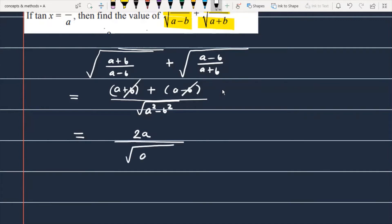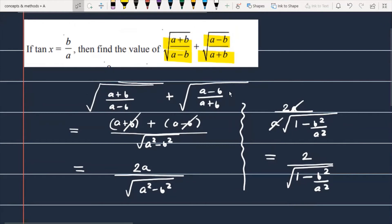If we talk about the denominator, this is a²-b². To further simplify, in the numerator you have 2a and in the denominator you can take a square root, which gives 1 - b²/a².